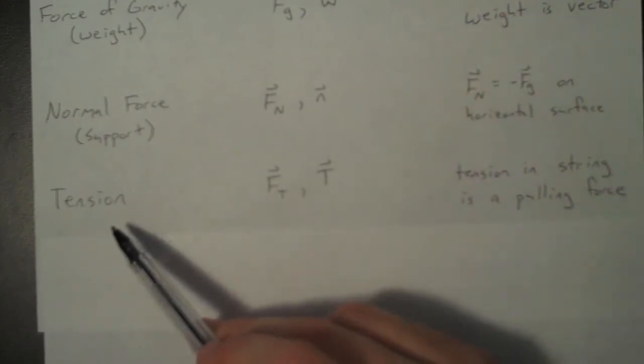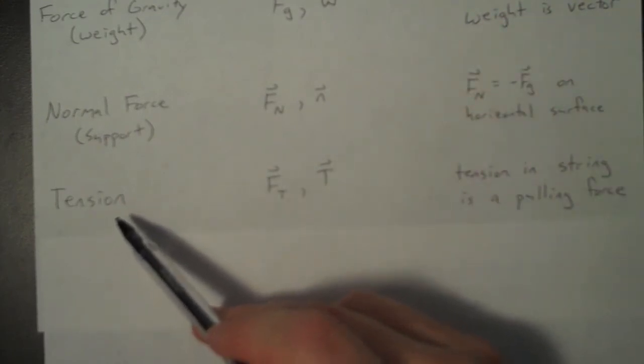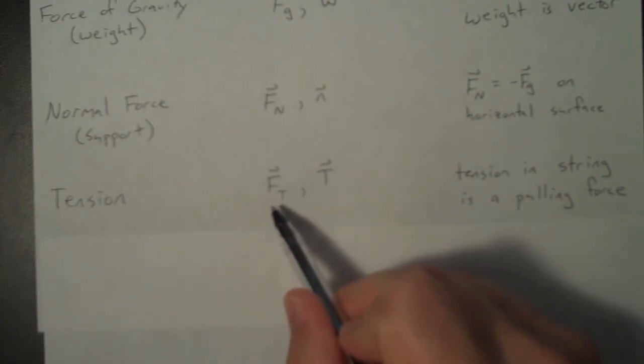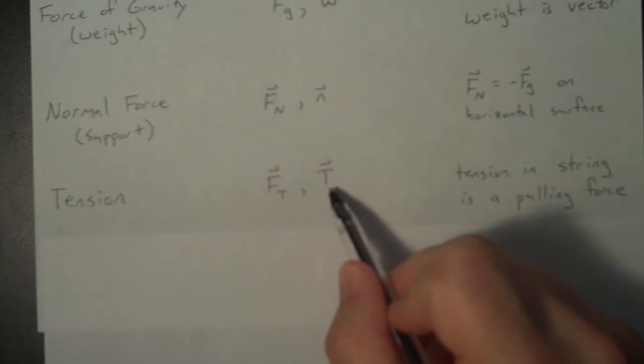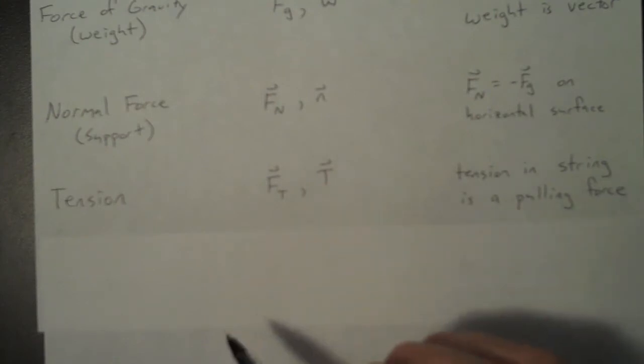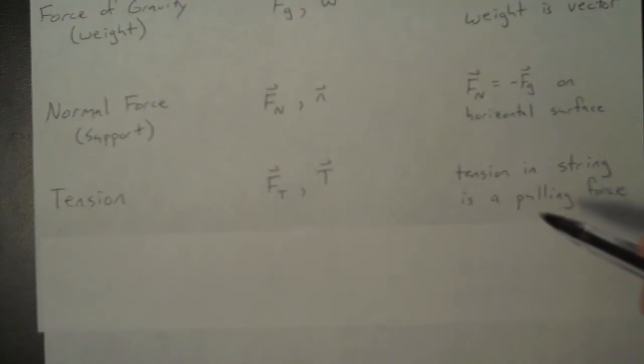Our third force we'll see in this class a lot is tension. Sometimes you'll see it abbreviated F subscript t, other times you'll see it with just the letter t. And in this class where you'll see tension oftentimes is a string pulling on an object.